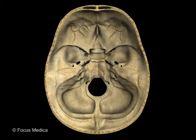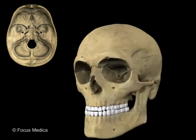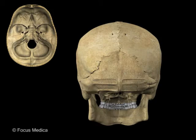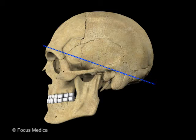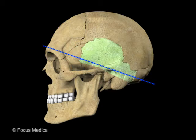The floor of the cranial fossa is best seen when the calvarium is removed. The horizontal plane of section of the calvarium will pass through the squamous part of frontal, greater wing of sphenoid, squamous part of temporal, and squamous part of the occipital bones.